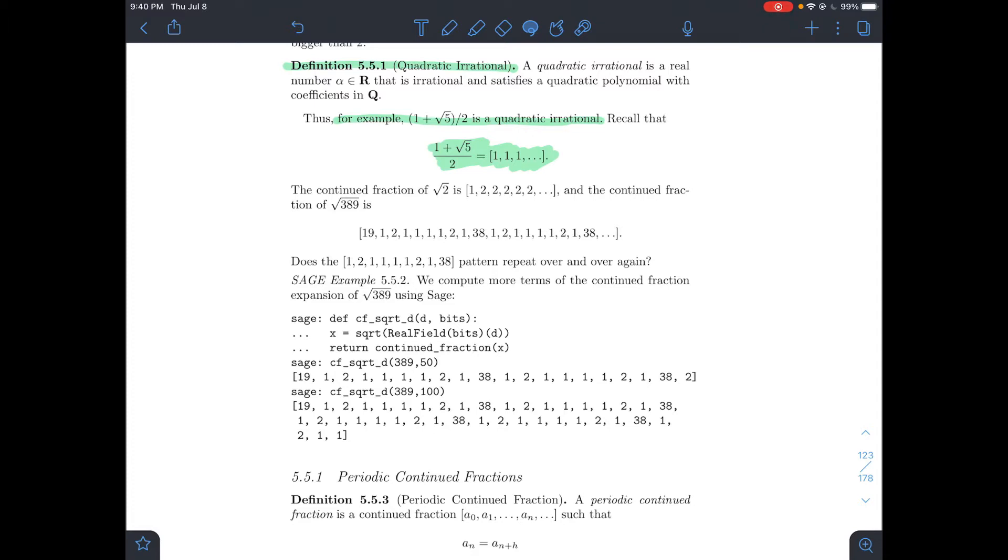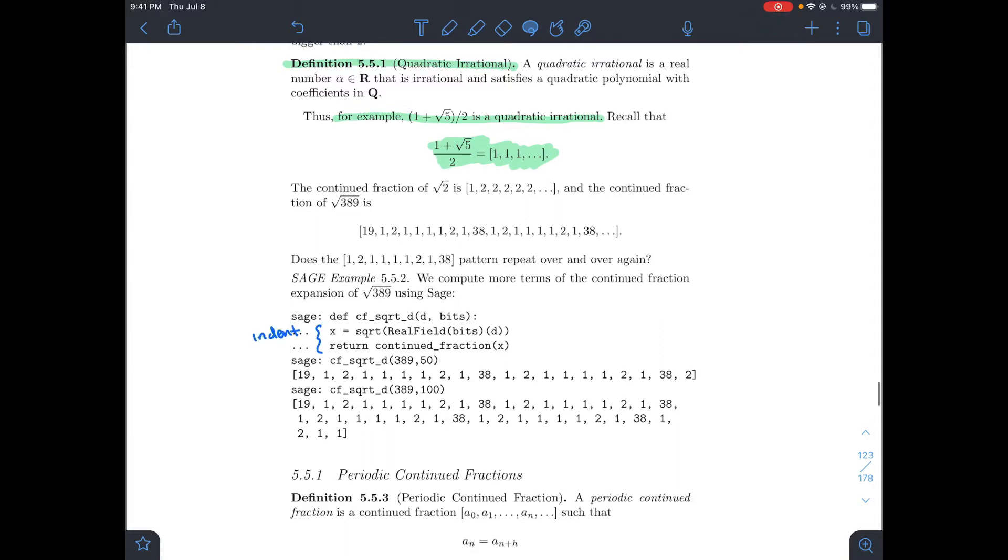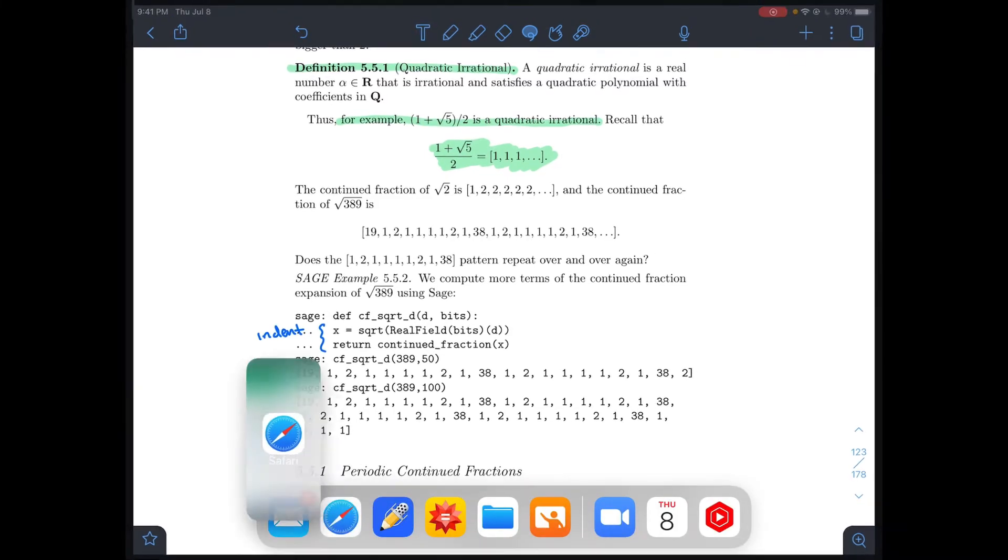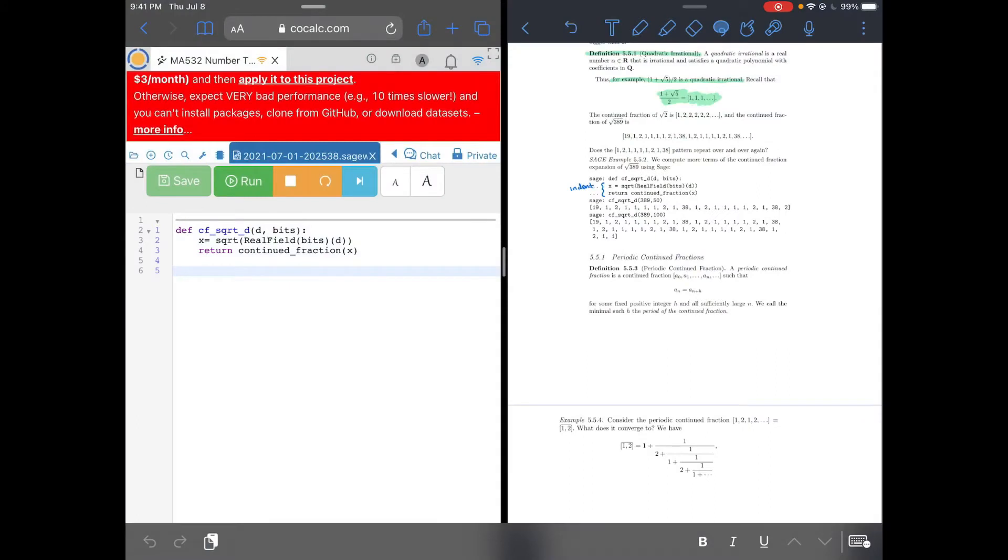The first thing we'll do is look at SAGE. There's a pretty easy way, given a quadratic irrational, to get SAGE to tell me the continued fraction representation. That's this code here. Something to notice about the code, though - it didn't print very well in the textbook. This should be an indentation here since we're defining this as a function. Let me go to SAGE.